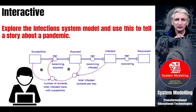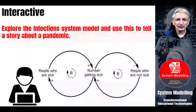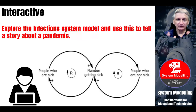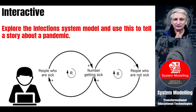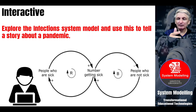The next model we're going to look at is used to explore concepts involved in a pandemic, with the number of people being infected and recovering and so forth. There are various simulations we can use to explore that. At a very simple level, we have a reinforcing and a balancing loop — reinforcing where the number of people who get sick increases the number of people who are sick, and that reinforces itself. But we also eventually get a number of people who are not sick.